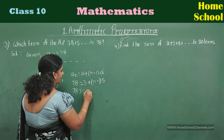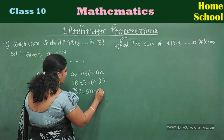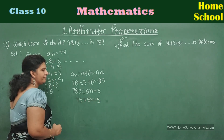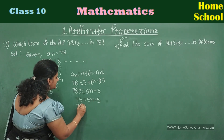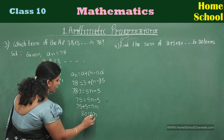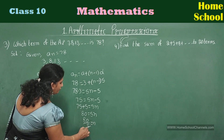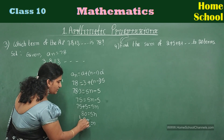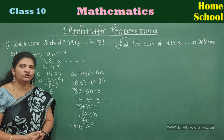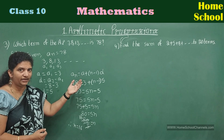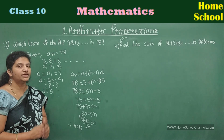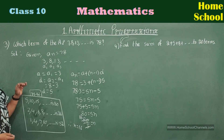Now bring −5 to the other side: 75 + 5 = 5n, so 80 = 5n. Dividing both sides by 5: n = 16. Therefore n = 16. Which term is 78? Therefore the 16th term is 78. End this problem with a clear statement: for the given arithmetic progression, the 16th term is 78.